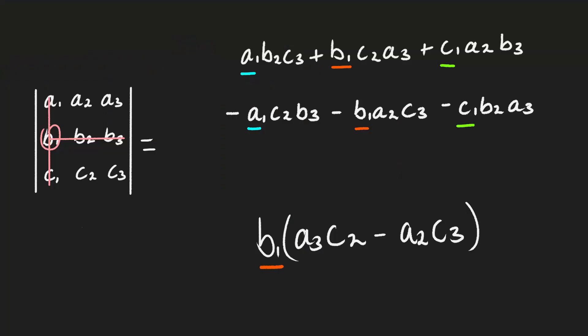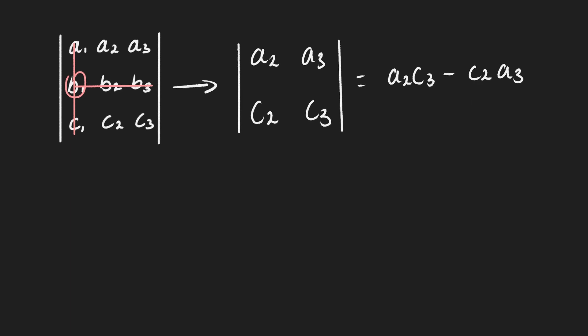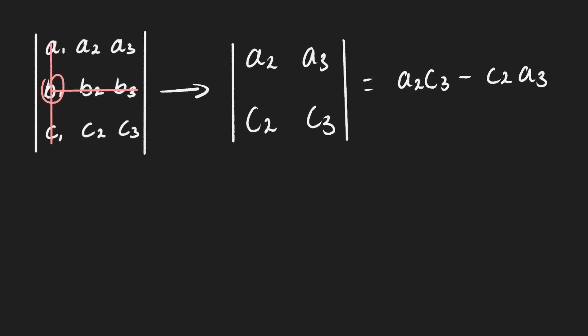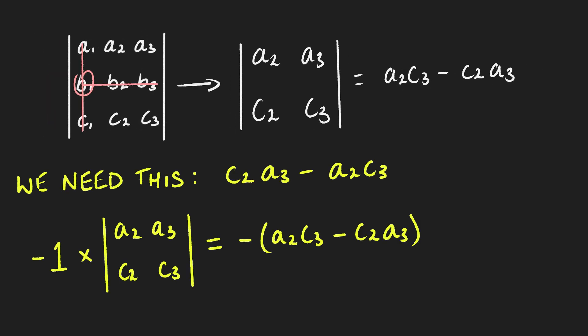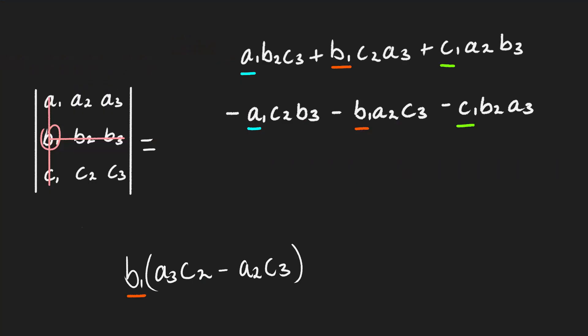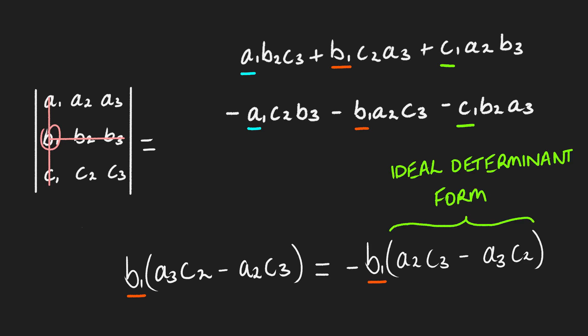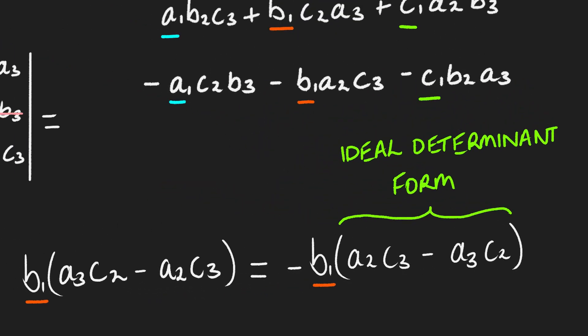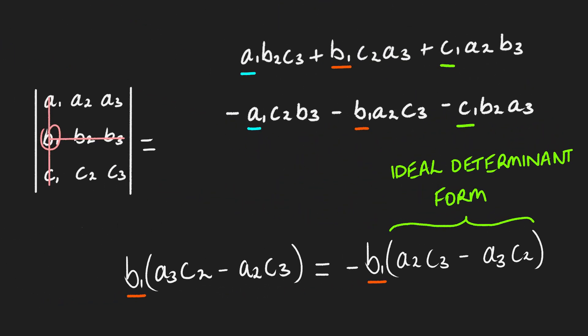Now let's try factoring out b1 from its terms. We're left with (a3·c2 minus a2·c3) all multiplied by b1, which is pretty much the determinant of what's left after blocking off the column and row that b1 is in — but it's not quite. It's actually the negative of that determinant. So if we want to follow the same pattern, we apply a negative: it becomes minus b1 multiplying (a2·c3 minus a3·c2), and that matches what we have in the 3x3 determinant.